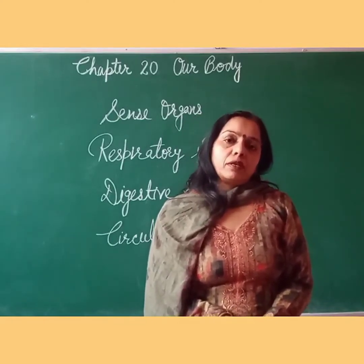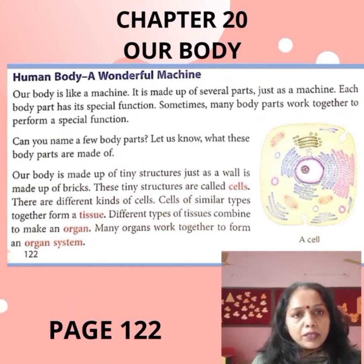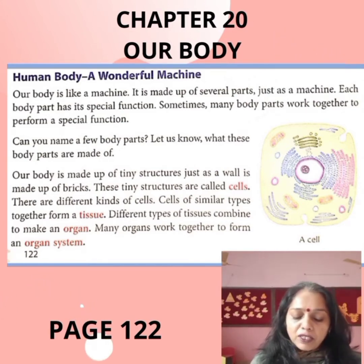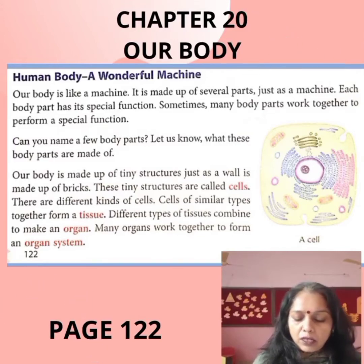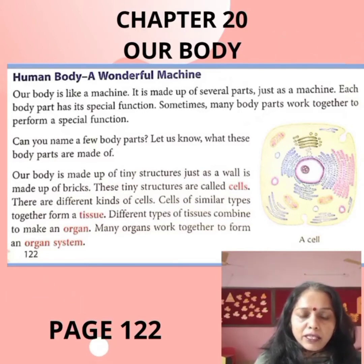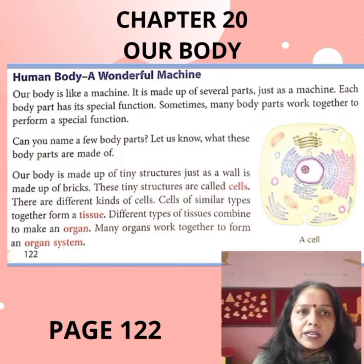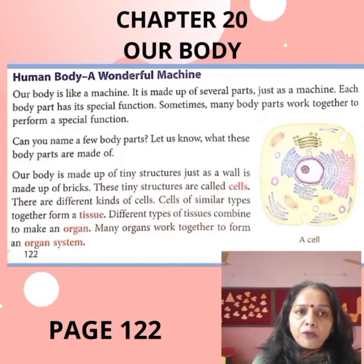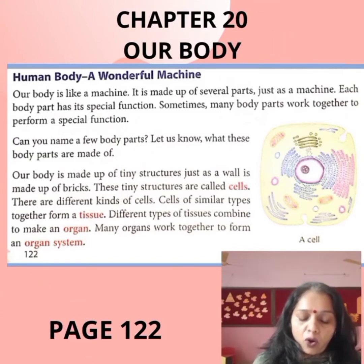Now we will do the reading of this chapter. Open your page number 122. Human Body — A Wonderful Machine. Our body is like a machine. It is made up of several parts just as a machine. Each body part has its special function. Our body is made up of tiny structures called cells, just as a wall is made up of bricks. Cells of similar types together form a tissue. Different types of tissues combine to make an organ. Many organs work together to form an organ system.